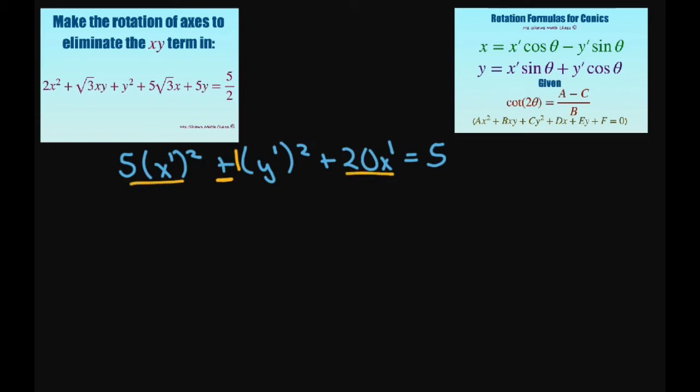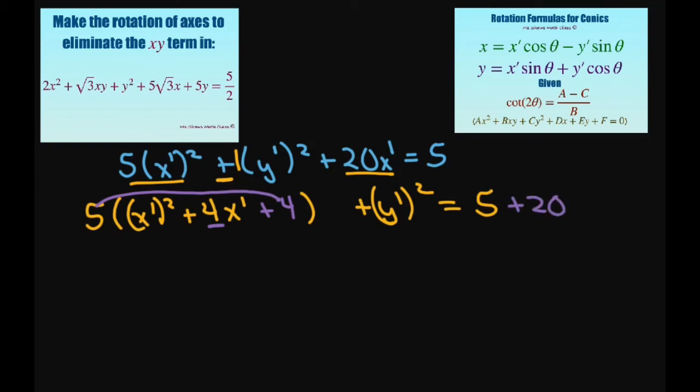So we're going to group our x's together. If I group my x's together I'm going to get x prime squared, and I'm factoring out a 5, so this is going to be plus 4 x prime, and then we have just the y prime squared equals 5. Now to complete the square you take half of 4 and square it and that's going to be plus 4. So since we're adding 5 times 4, you have to add 20 on this side. Therefore when you condense this we're going to get 5 times x prime plus 2 squared plus y prime squared equals 25.